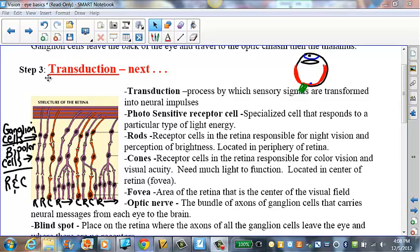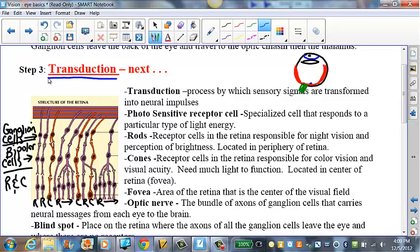Hey, welcome back, everybody. We are going to finish up talking about transduction in this video, and we're going to spend a little bit of time on the retina. Remember, in the previous video, we talked about the different parts of the eye that help gather light waves, electromagnetic radiation, and focus that information onto the retina in the back of the eye, and that is where transduction takes place.